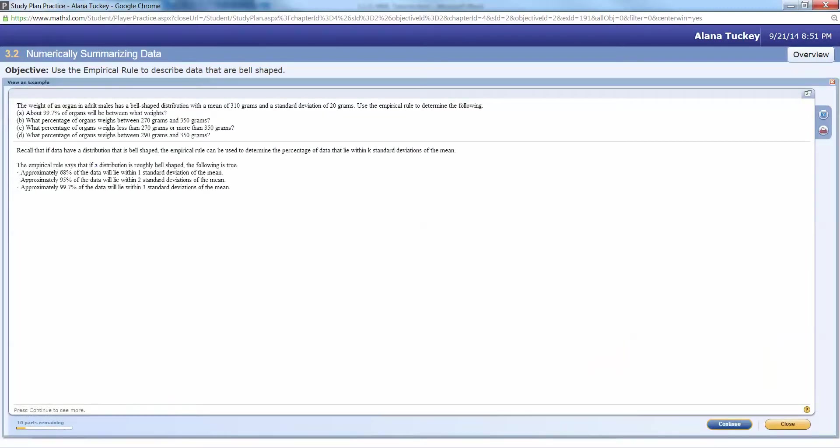We have the weight of an organ in adult males has a bell-shaped distribution with a mean of 310 grams and a standard deviation of 20 grams. Use the empirical rule to determine: About 99.7% of the organs will be between what weights? What percentage of organs weigh between 270 and 350? What percentage weigh less than 270 or more than 350? And what percentage weighs between 290 and 350?